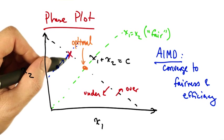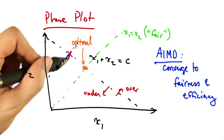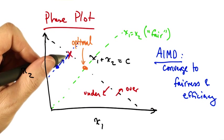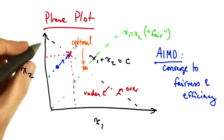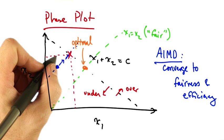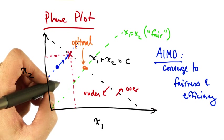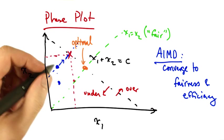In multiplicative decrease, each sender decreases its rate by some constant factor of its current sending rate. For example, suppose that each one of these senders decreases its sending rate by half. The resulting operating point is shown by this second blue dot.